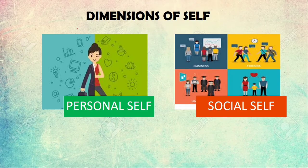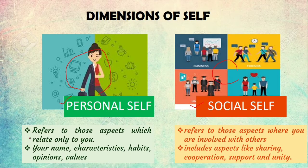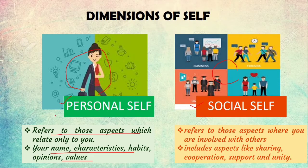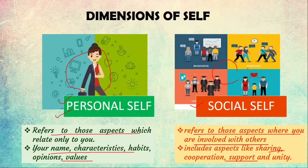Multidimensional means we have a personal self and a social self. Personal self refers to those aspects which relate only to you — your name, characteristics, habits, opinions, values, what you think of society, what you think about yourself. Nobody else is involved in your personal self. The social self refers to those aspects where you are involved with others — sharing, cooperation, support, unity, being friendly, being loyal. Social self is present in your dealings with friends, families, and your profession.